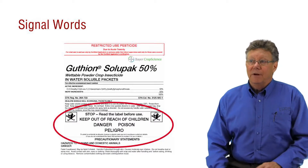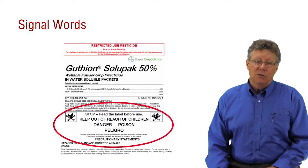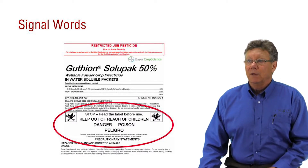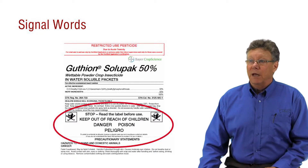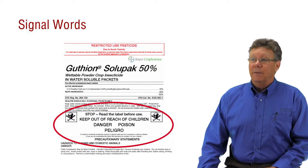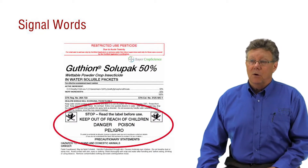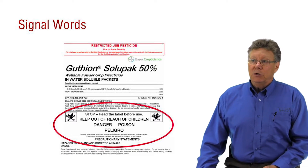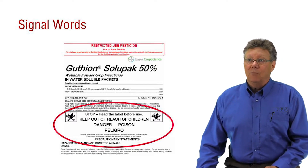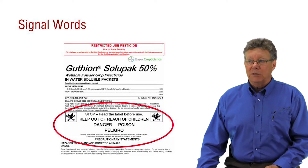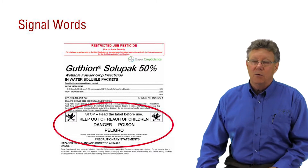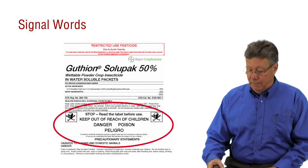It's usually very easy to find a signal word on the pesticide label. Here's an example of a label with danger, poison, peligro and the skull and crossbones. If you are using a pesticide with this signal word, remember that it's highly toxic no matter how you are exposed to it.